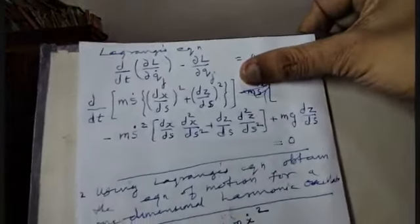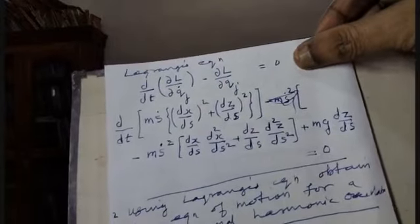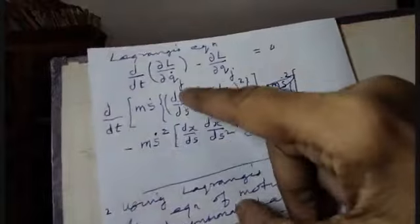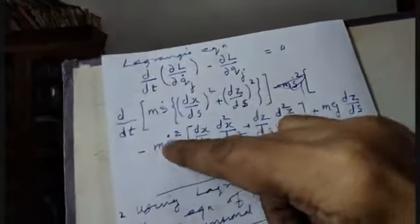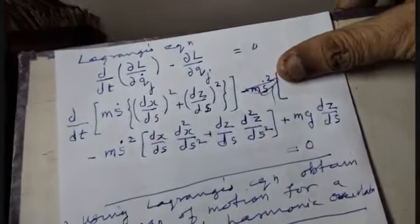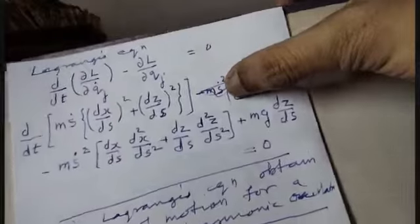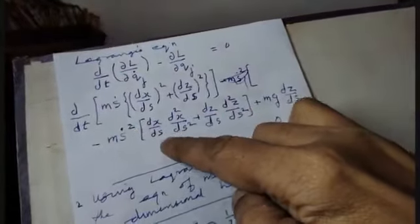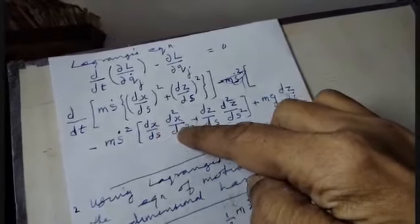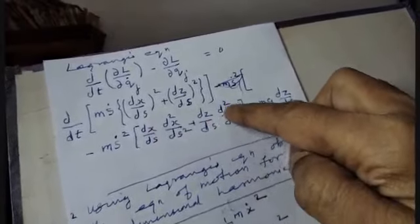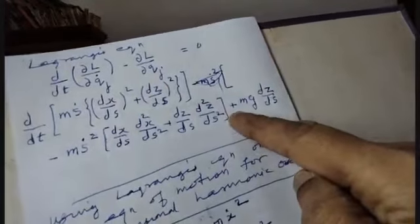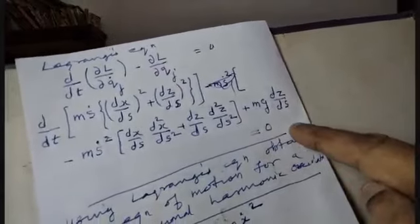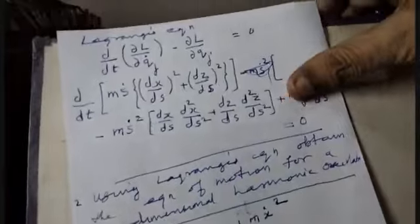The Lagrange equation is d/dt(∂L/∂ṡ) minus ∂L/∂s equals 0. Substituting, we get d/dt[mṡ((dx/ds)² + (dz/ds)²)] minus mṡ²[(dx/ds)(d²x/ds²) + (dz/ds)(d²z/ds²)] plus mg(dz/ds) equals 0. This is the required equation of motion of the particle.